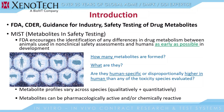As a general introduction, metabolites and safety testing is something that the FDA is very eager to have nailed down as much as possible. They encourage the identification of differences in drug metabolism between animals used in non-clinical safety assessments and humans as early as possible in development. In vitro studies are really helpful and critical to answer the questions of how many metabolites are formed, what are they, and are they human specific or disproportionately higher in human than any of the toxic species that you're going to evaluate.